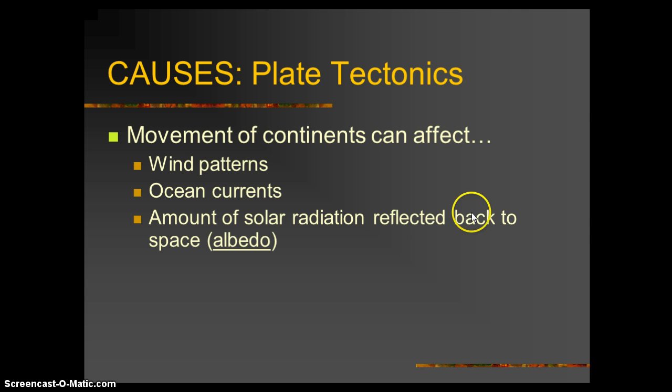The amount of solar radiation reflected back into space is called albedo. This is a brand new word — albedo means reflectivity. So a mirror is going to have 100% albedo, 100% reflective. And if it doesn't reflect, if it doesn't have albedo, then it's going to absorb. So the opposite of reflection is absorption.